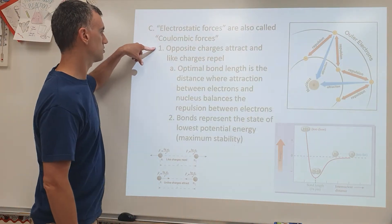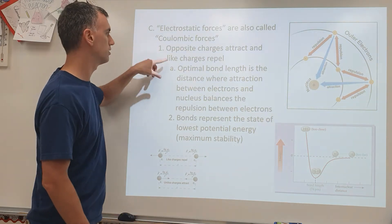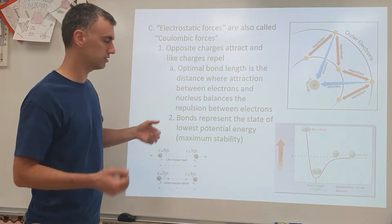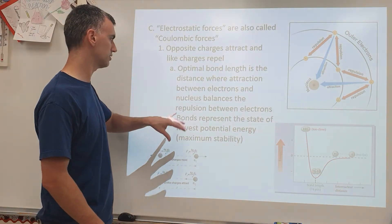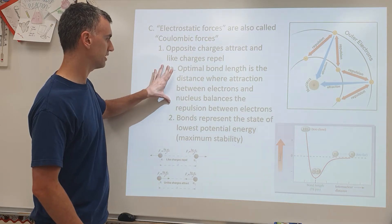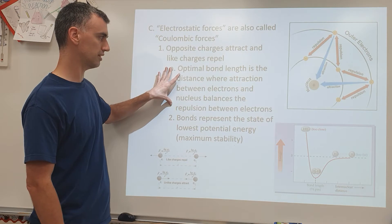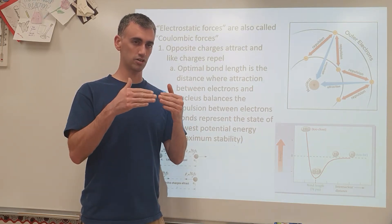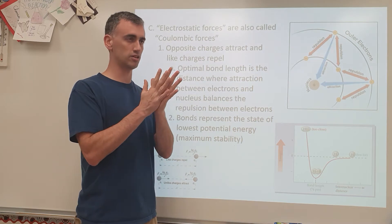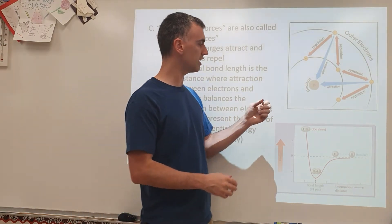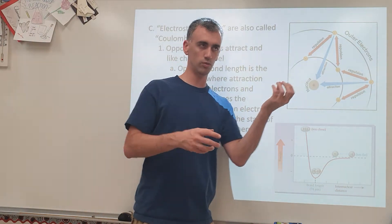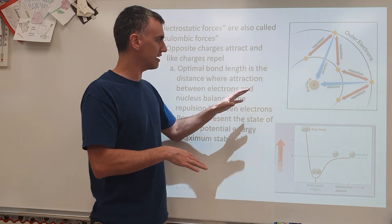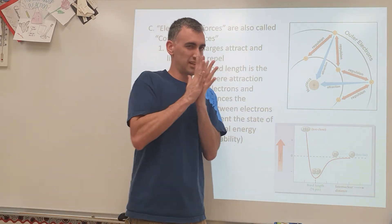Opposite charges attract, like charges repel. Optimal bond length is the distance where attraction between electrons and the nucleus balances repulsion between the electrons and the nuclei of the two atoms. Atoms bond because of attraction between opposite charges, but they don't just slam into each other. They have to be at a certain distance — too close and the two nuclei repel each other, and the electrons in one repel the electrons from the other. Too far, and there's just no force of attraction.